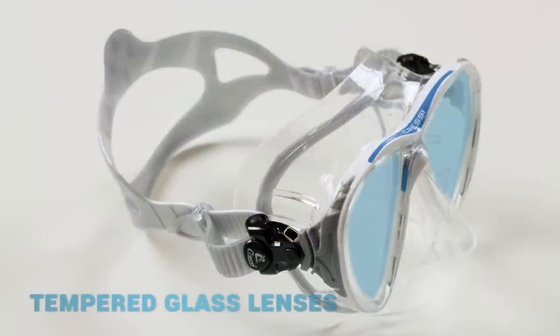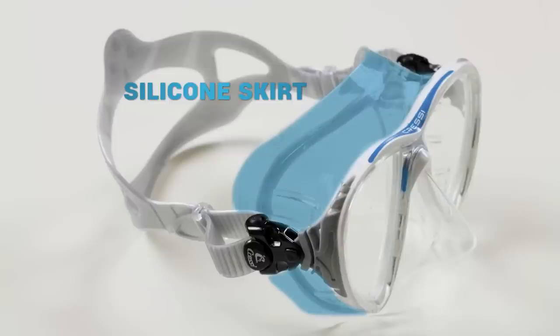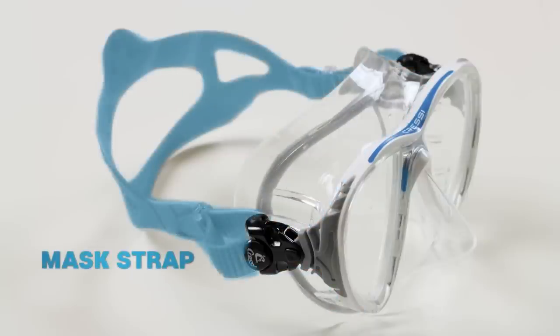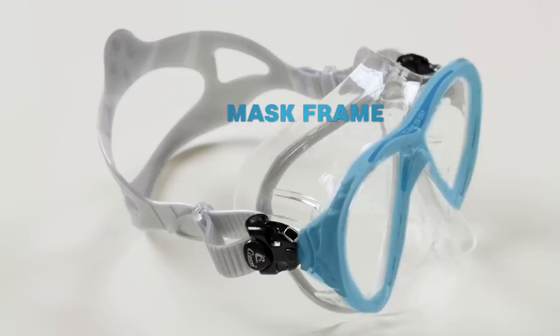The basic construction of a mask is a tempered glass lens in front of the eye, a silicone skirt to create a seal against the face, a strap to keep the mask secured to the face and a frame to structure to fix those components together. Each of those components can vary in depth greatly and each manufacturer will have their own take on what is the best way to do things.